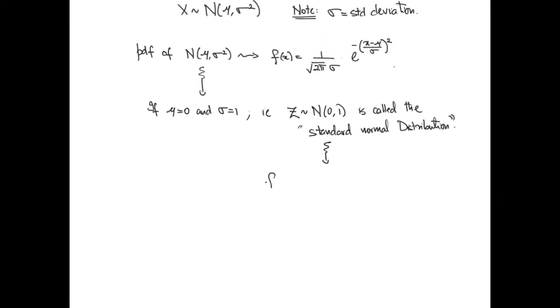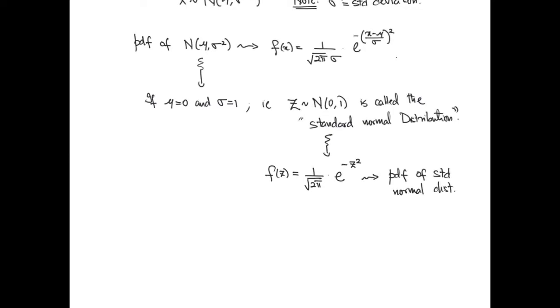The PDF in this case looks much simpler, which is 1 over square root of 2 pi times e to the minus z squared.